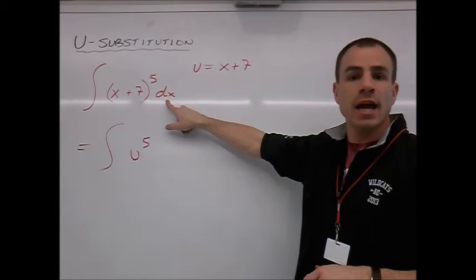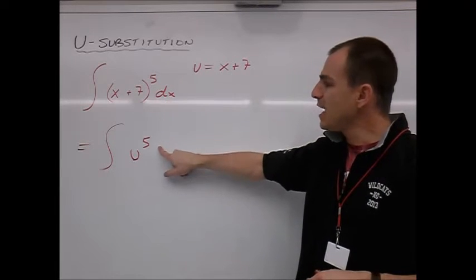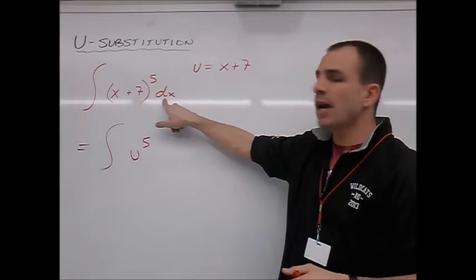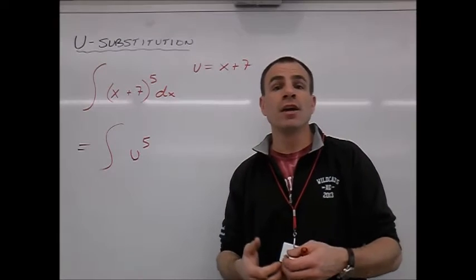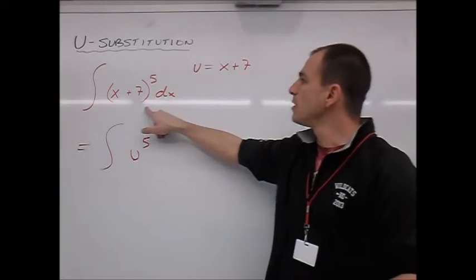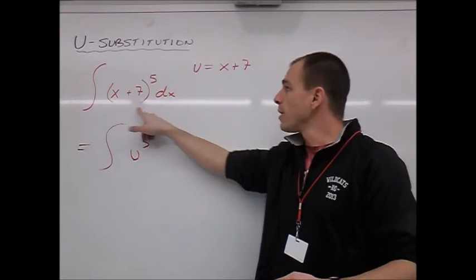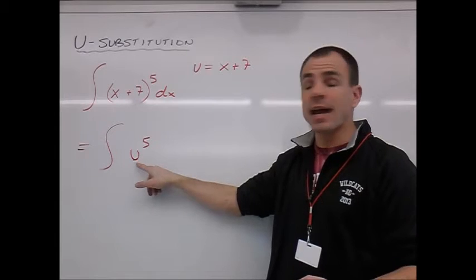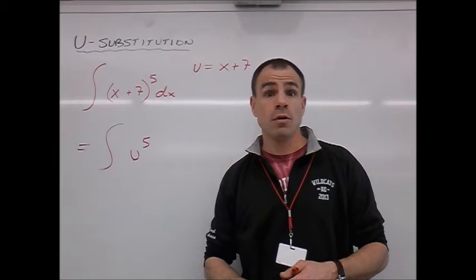We still have this dx here. So technically the dx should be moving down, but it cannot move down. And the reason being is that this dx, this differential, is telling us the variable in which we are anti-deriving with respect to. This is all in terms of x. We have x here and we have x there. So if we've got u here now, then we really need a du.